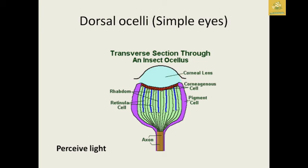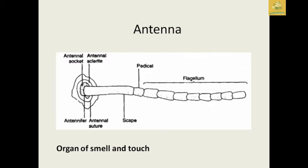The dorsal ocelli, known as the simple eye, have a transverse section and are found in the forehead of the insects. Their main function is to gather light, which is required by the compound eyes.